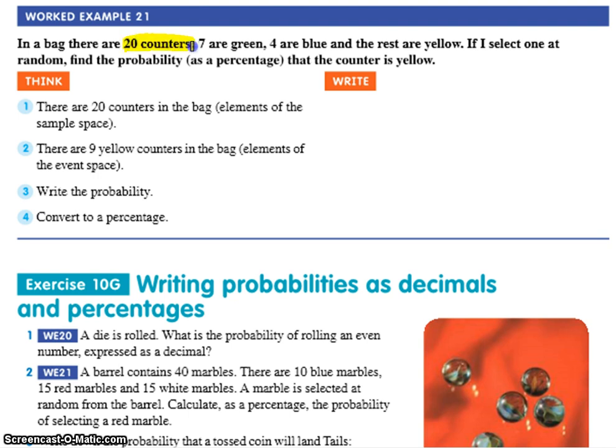20 counters in total. 7 green, 4 are blue and the rest are yellow. What I would probably recommend doing is before you actually go on to anything else, work out how many of them are yellow.